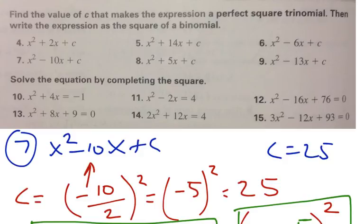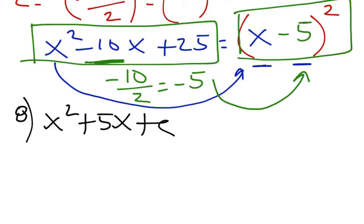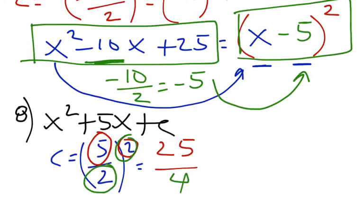To finish, let's do something where the middle value is not even. Let's do number 8: x squared plus 5x plus C. I need to find the value of C. C is 5 divided by 2, to the second power. In this class, I don't use calculators, so I'll use fractions: 5 squared is 25, and 2 squared is 4. So the value of C is 25 over 4.